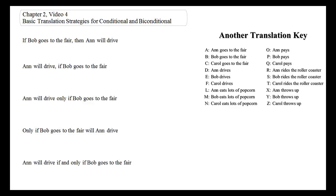Welcome to Chapter 2, Video 4: Basic Translation Strategies for Conditional and Bi-Conditional. We'll use the arrow symbol for our if-then conditional and the double arrow symbol for our if-and-only-if biconditional.